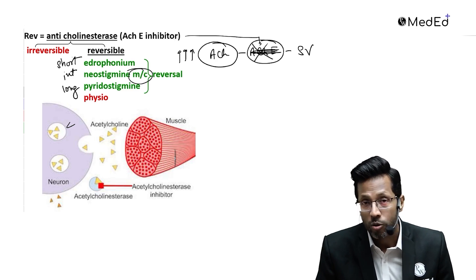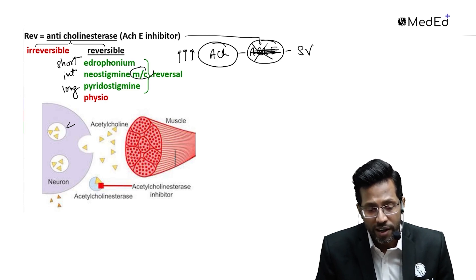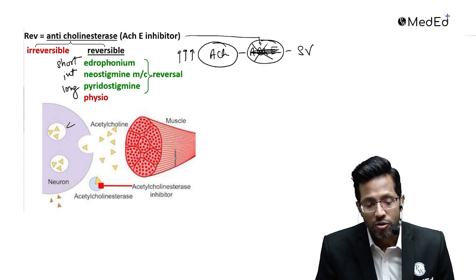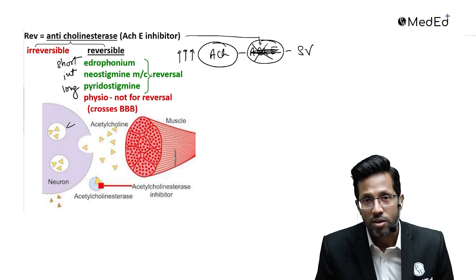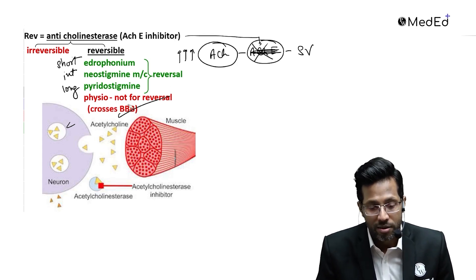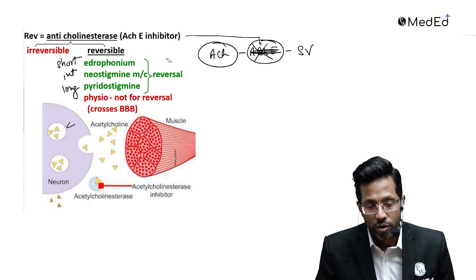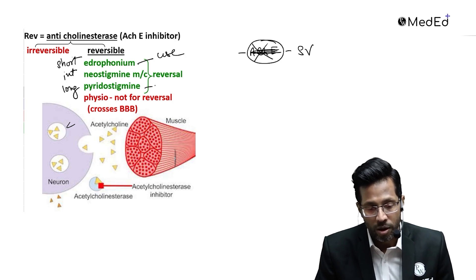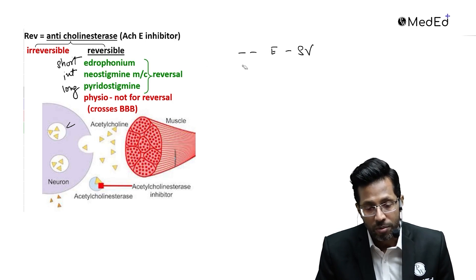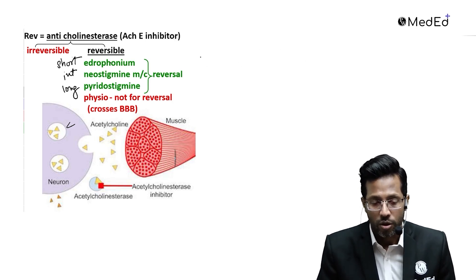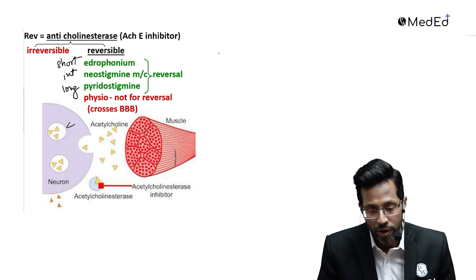Physostigmine is not used for reversal because it crosses the blood-brain barrier — a concept you will have studied in pharmacology. Neostigmine is the most commonly used. You can also use edrophonium, but physostigmine should not be used because it crosses the blood-brain barrier.